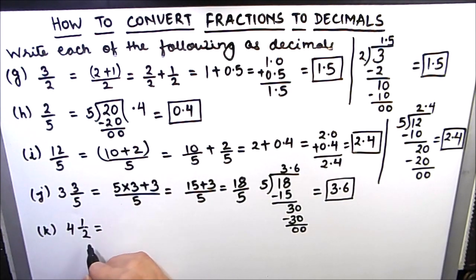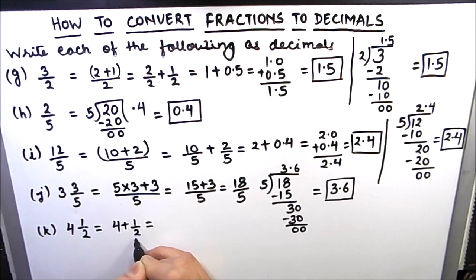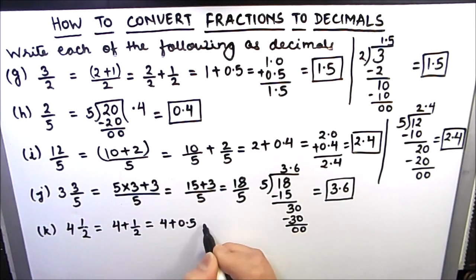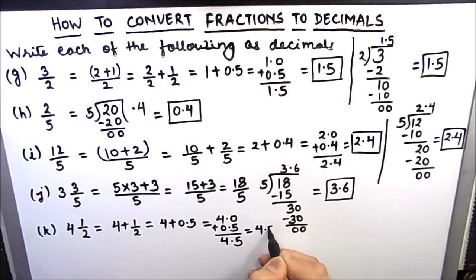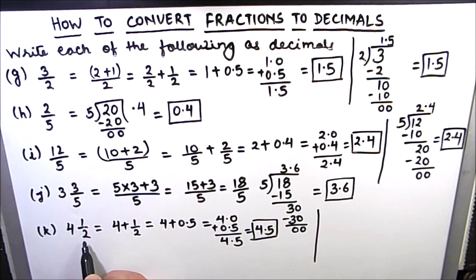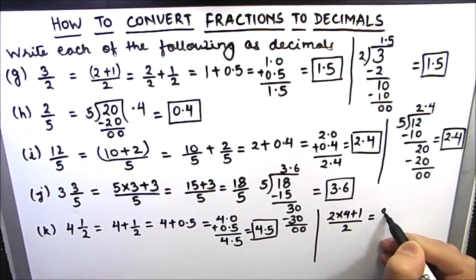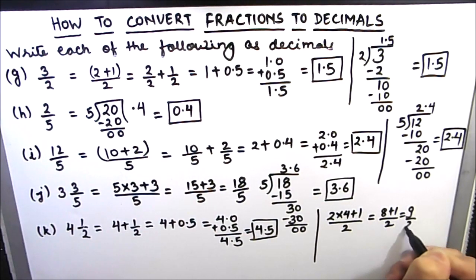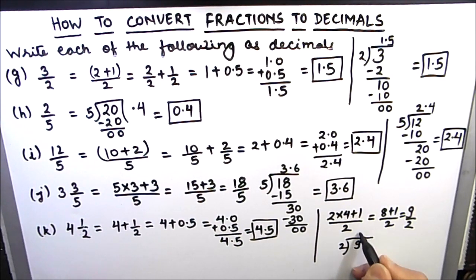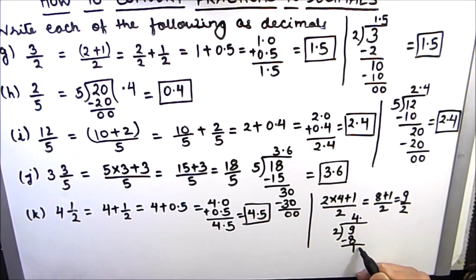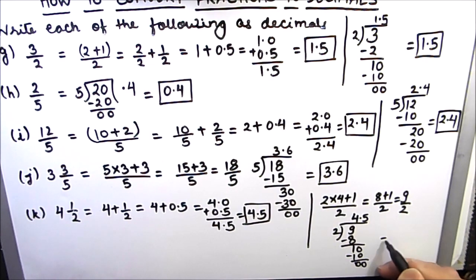Next is 4 and 1 by 2. There are two ways for this. We can write 4 and a half as 4 plus 1 by 2, and 1 by 2 is 0.5 we know. So 4 plus 0.5, which is 4.0 plus 0.5, is equal to 4.5. The other method is by converting to an improper fraction: 2 times 4 plus 1 divided by 2, which is 8 plus 1 divided by 2, equal to 9 divided by 2. Now we divide 9 by 2: 2 times 4 is 8, we are left with 1. 1 cannot go by 2, so we put a decimal point and a 0. 2 times 5 is 10. So our final answer is 4.5.